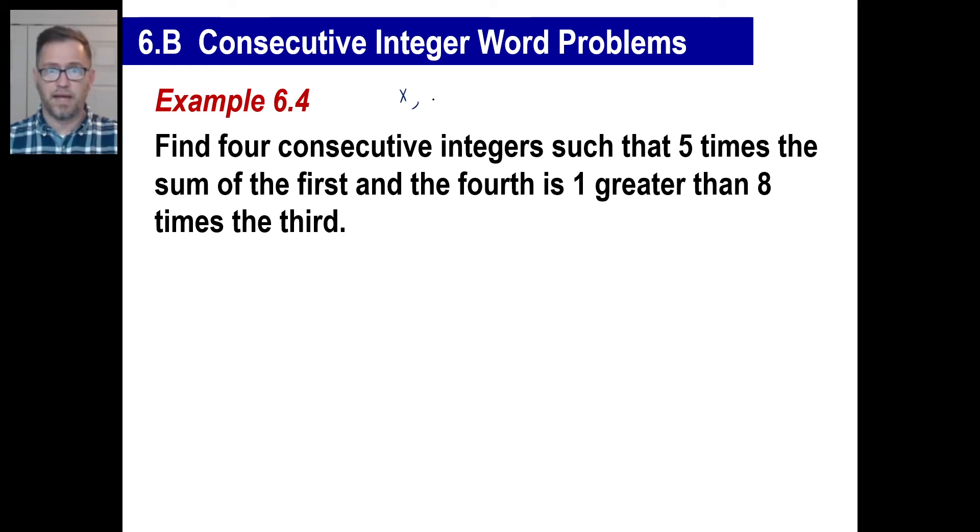So what's the next consecutive integer? Let's say we start with 8. The next consecutive integer is 9, obviously, right? So how would we relate 9 to 8? We'd say that would be x plus 1, right? That's the next one. The third one would be x plus 2. And the fourth one, since we're looking for 4, is x plus 3. Let's figure it out now. So 5 times the sum of the first and the fourth. So the sum of the first and the fourth would be x plus x plus 3.